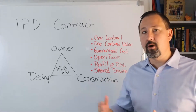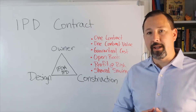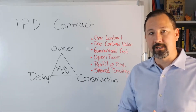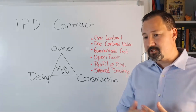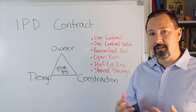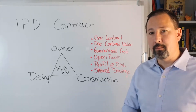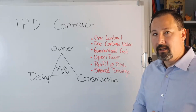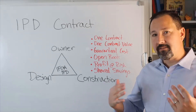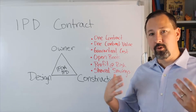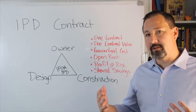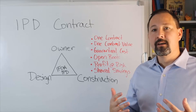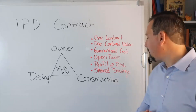In a later video, we'll go into more detail on how that target cost and the profit at risk works. Also, in exchange for putting their profit at risk and agreeing to be open book, the owner typically provides a shared savings plan. So if the project finishes under budget, the team will get their full projected profit for the job as well as an enhanced profit from the shared savings on the project.